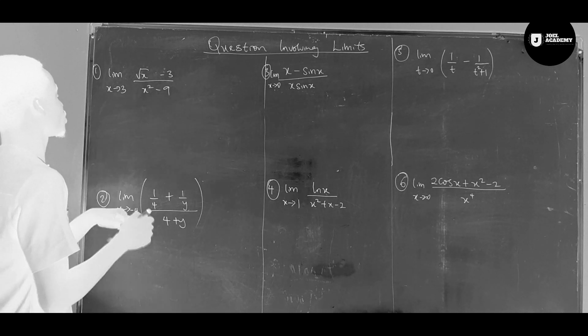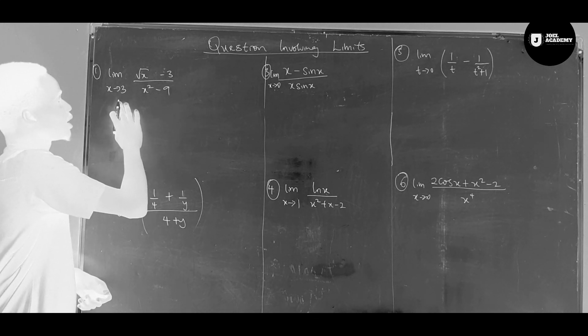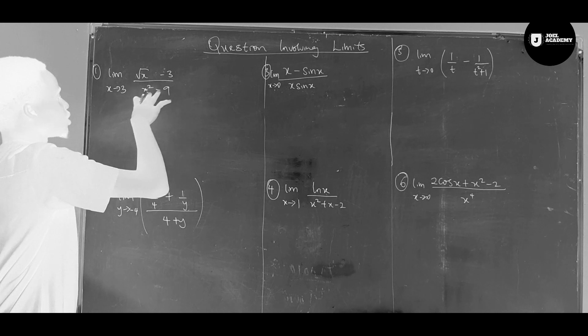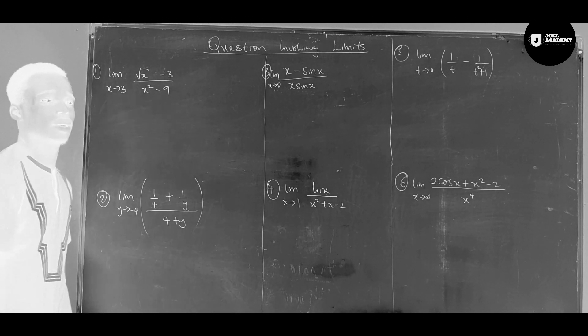So now we have the first question. The limit as x approaches 3 of x to the power 1/2, minus 3, over x squared minus 9.